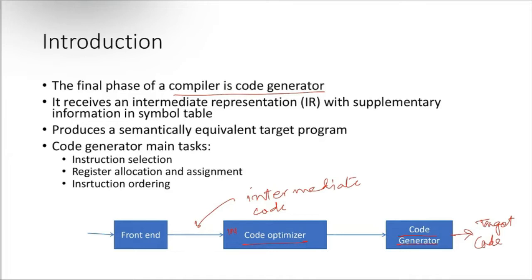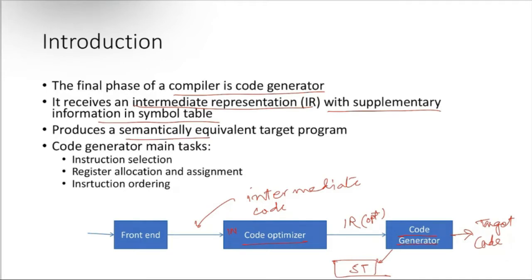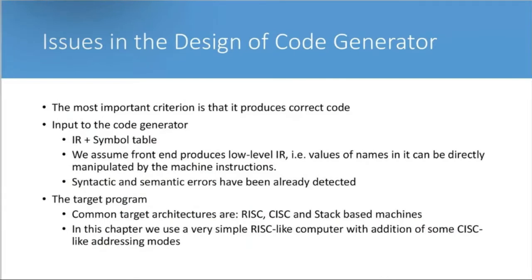The code generator receives an intermediate representation — the IR — which is definitely optimized, along with supplementary information in the symbol table. It produces a semantically equivalent target program. The main tasks of the code generator are instruction selection, register allocation and assignment, and instruction ordering — in what order the instructions are going to be executed.